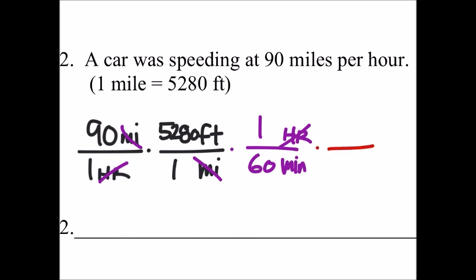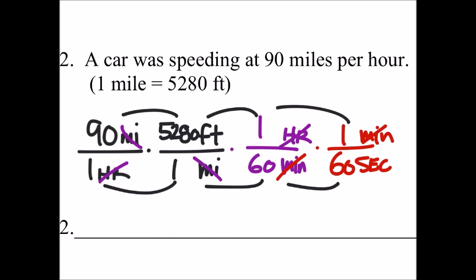But we need to cancel out the minutes as well. So we need minutes in the numerator and seconds in the denominator which will cancel those. And it's 60 seconds for every one minute. That's great because now we can just multiply these numerators and each denominator as well.